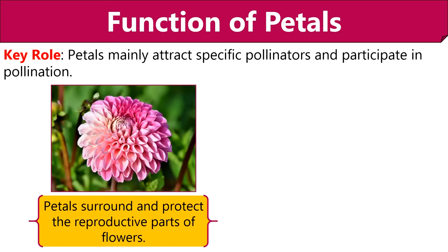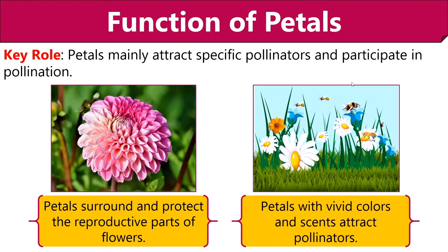Then petals play a key role in pollination by attracting pollinators to the flower. Like sepals, petals also protect the reproductive parts of a flower. In a flower, petals are the center of attraction because they have unusual shapes, different colors and scents. This property of petals attracts pollinators like bees, butterflies etc., that transfer pollens from one flower to another.